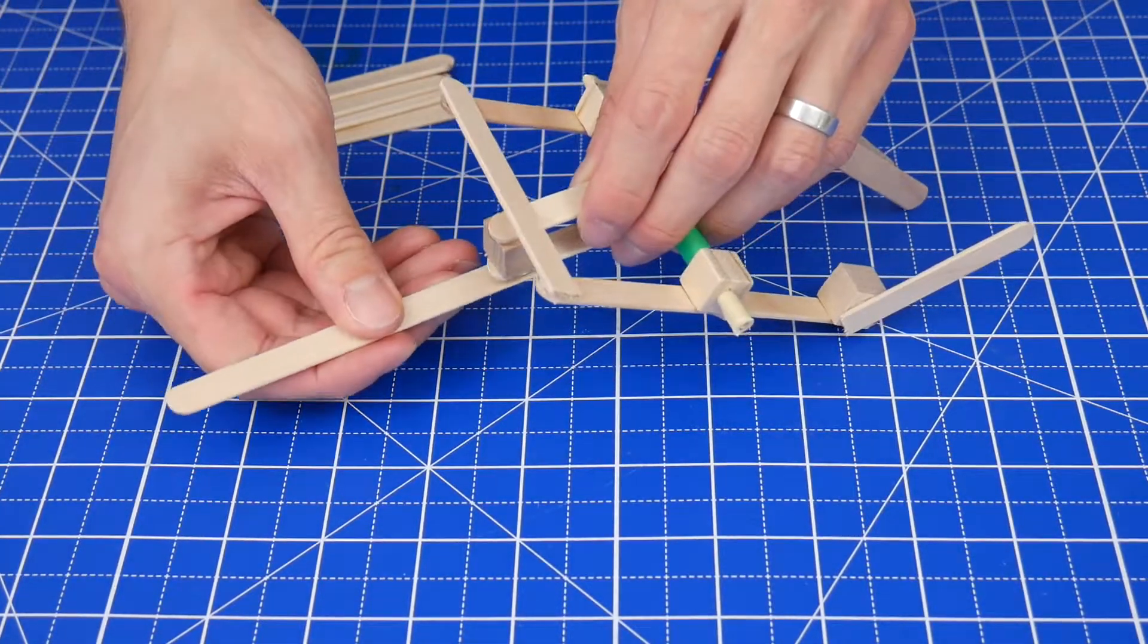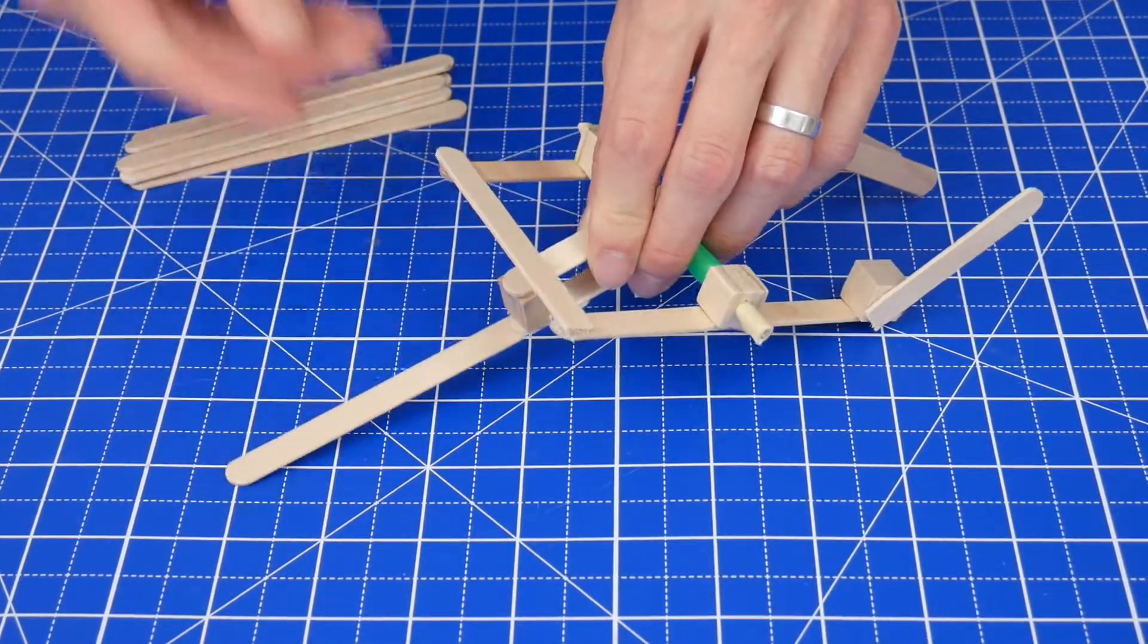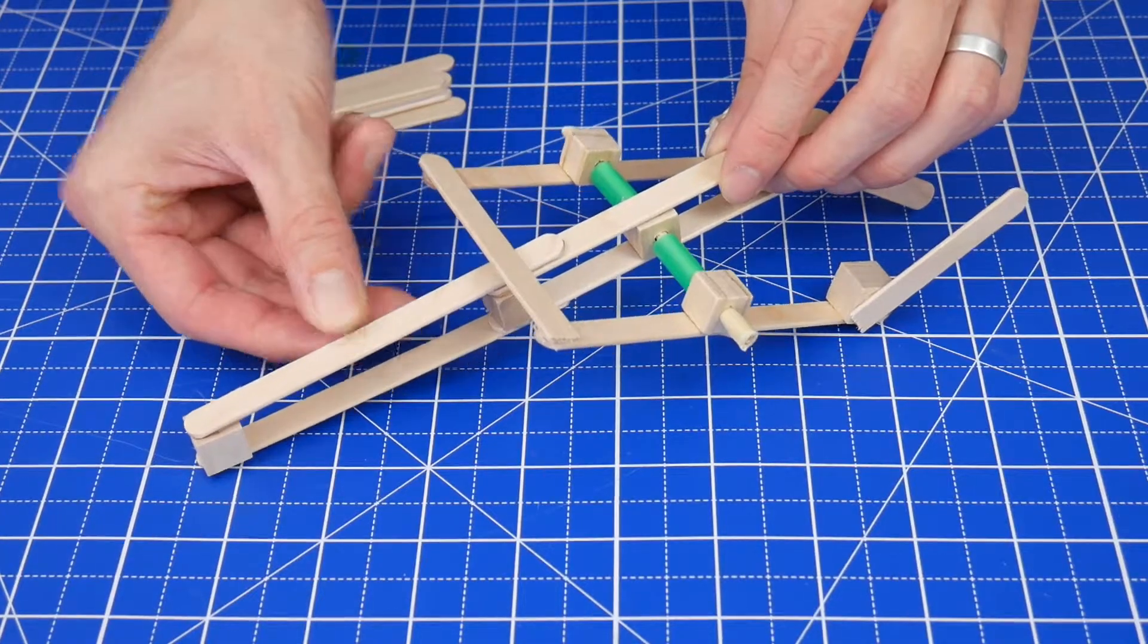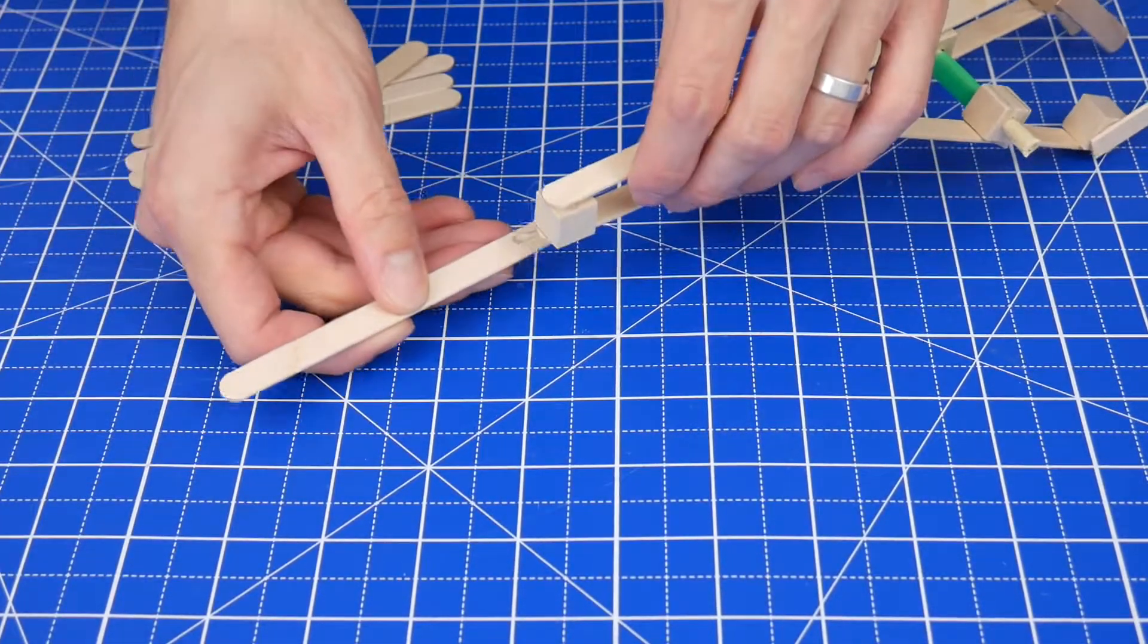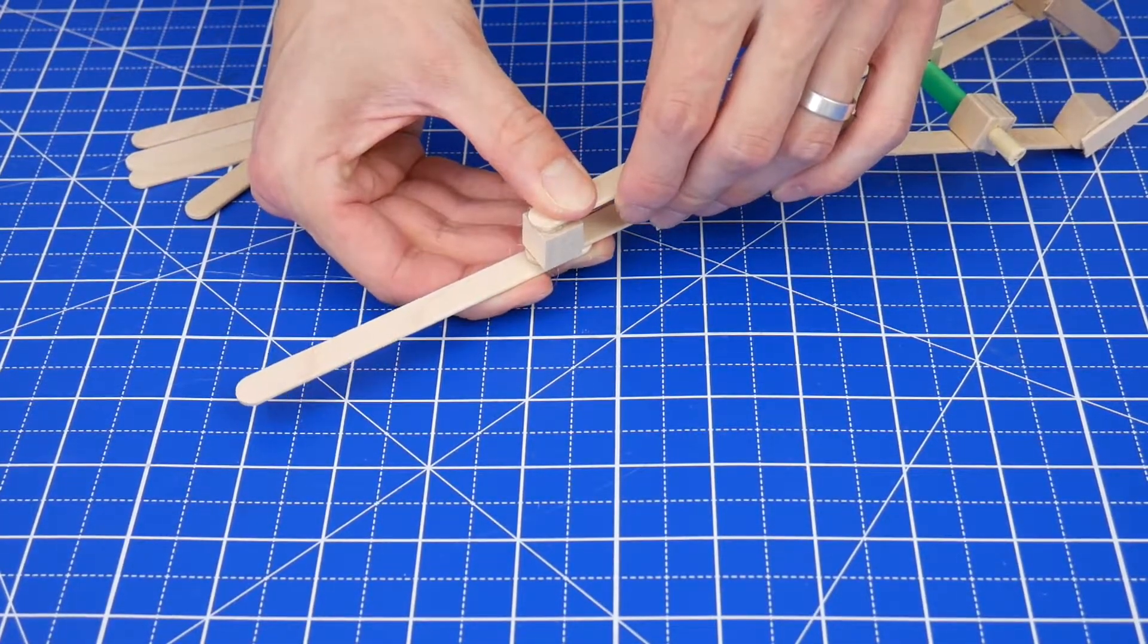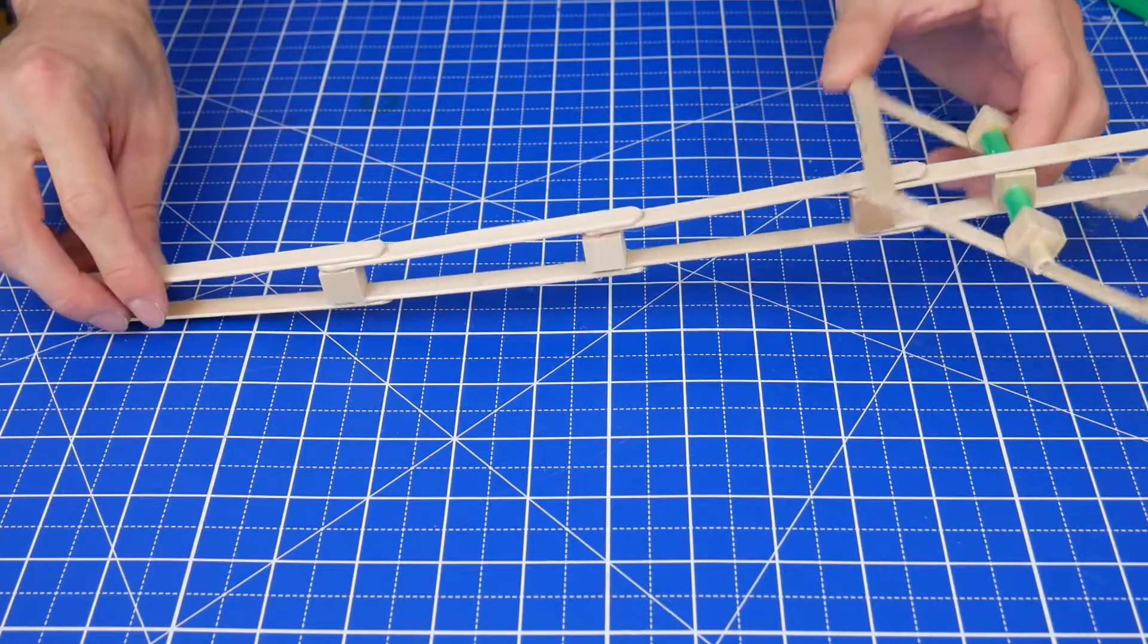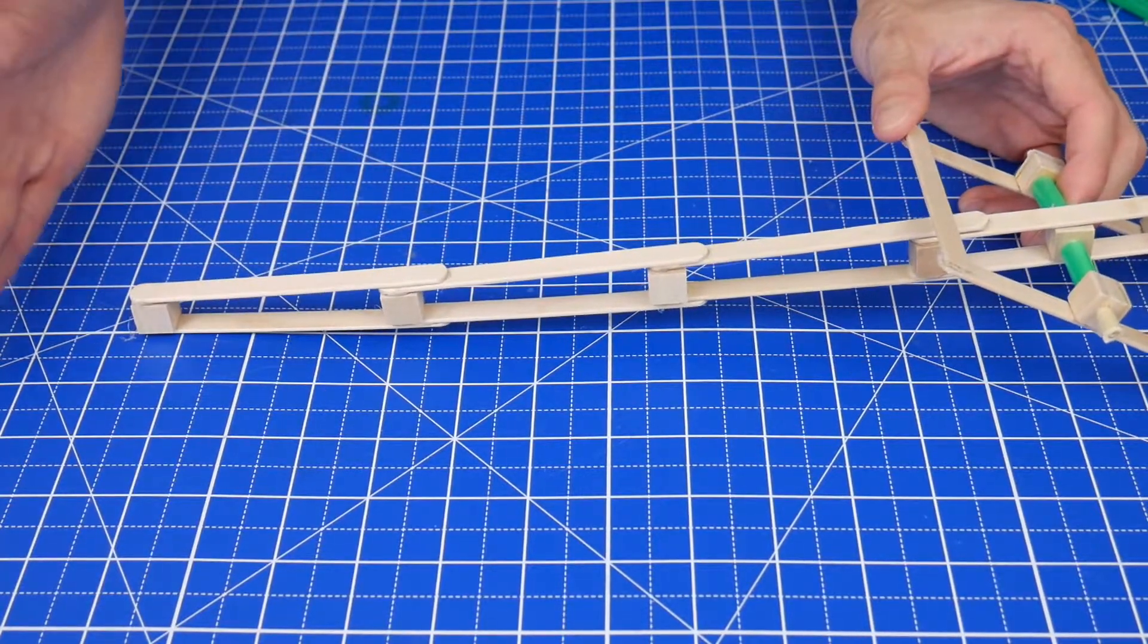Next, extend the mechanical hand by gluing a series of craft sticks and craft cubes together to form a long sturdy beam. Make sure to overlap the sticks by at least half an inch. I think extending the grabber by an additional three sticks is a good place to start, but you can always make it longer or shorter.